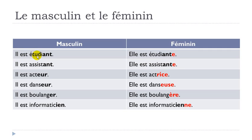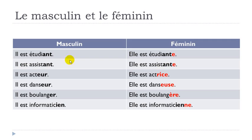This will change the pronunciation a little. For the masculine: il est étudiant — you don't pronounce the final T. But for the feminine: elle est étudiante — you insist on the T. Similarly: il est assistant, elle est assistante.